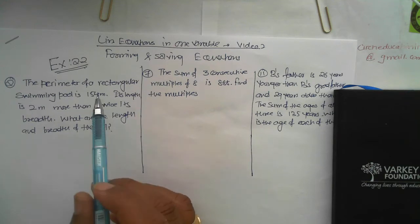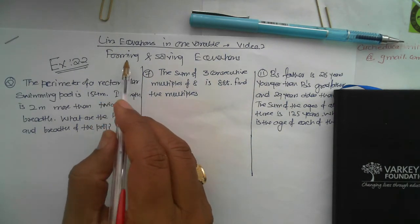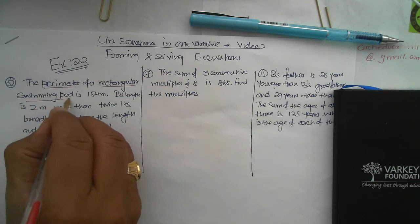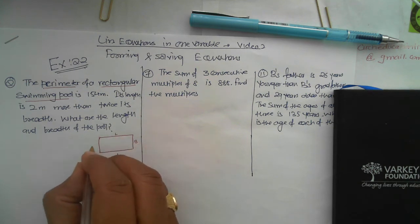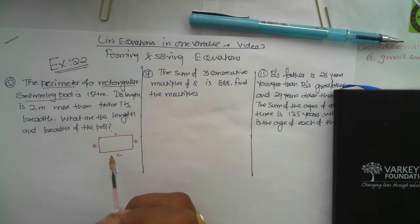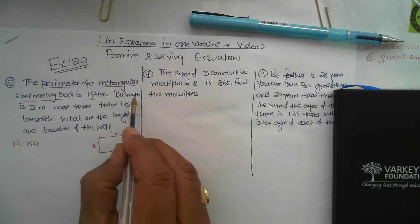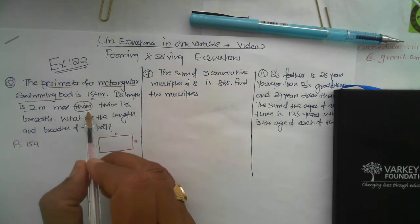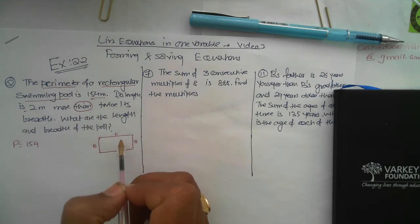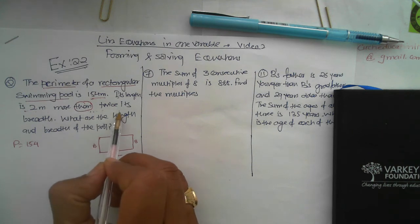The second question of the exercise: reading carefully is really important in these kinds of questions to form the equation. It says the perimeter of a rectangular swimming pool — I'll draw a diagram. This is the length, this is the breadth, the length and breadth again. The perimeter is all four sides added, which equals 154. Now the important part: its length is two meters more than — try and understand this technique. You have to take one quantity as a letter. I advise you to always read carefully and take x as the quantity which follows after the word 'then', as that is your reference point.